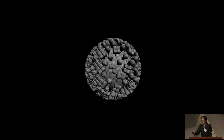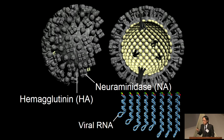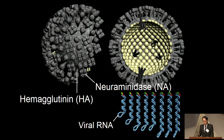The causative agent is influenza A virus. This virus contains two surface glycoproteins, hemagglutinin and neuraminidase — H and N. Based on the properties of these proteins, they are classified into H1 through 18 and N1 through 11. That is how we call H1N1, H5N1, or H7N9.